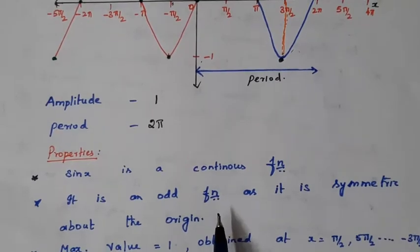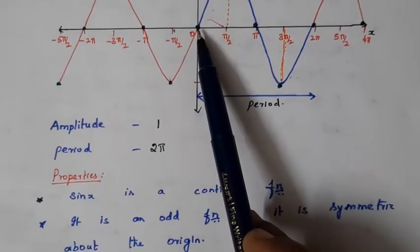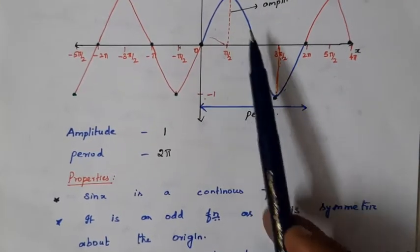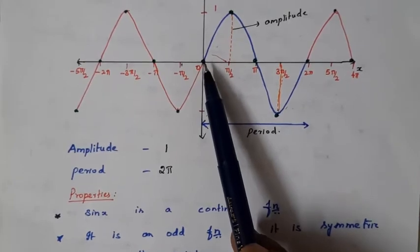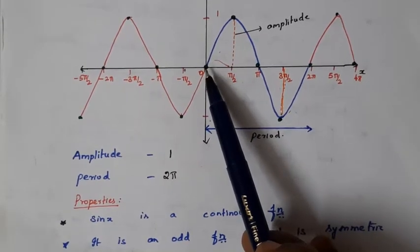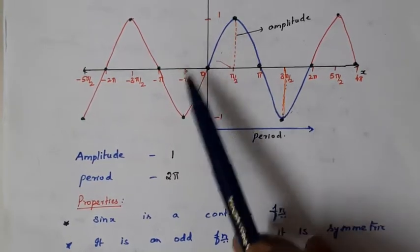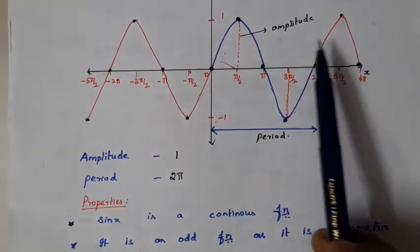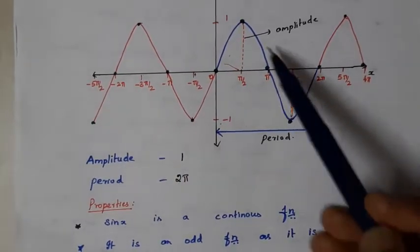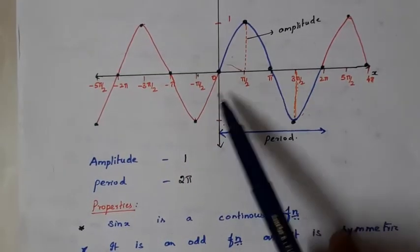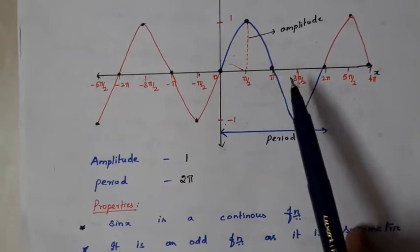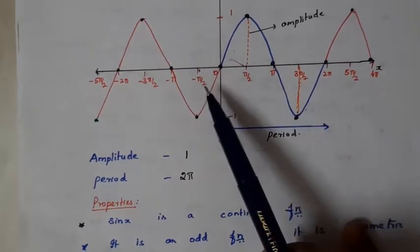The sine function is also an odd function because the graph is symmetric about the origin. A graph is symmetric about the origin when, if rotated through 180 degrees, it looks the same. If this part is rotated 180 degrees, it will go to this part, and if that part is rotated, it will come back. So the graph remains unchanged — that is called symmetric about origin.